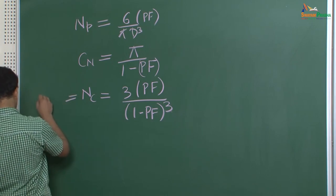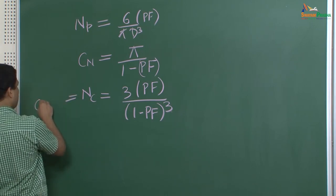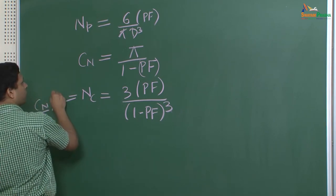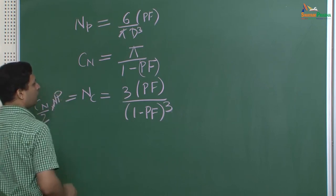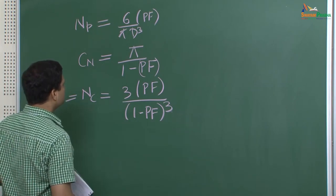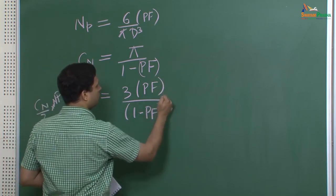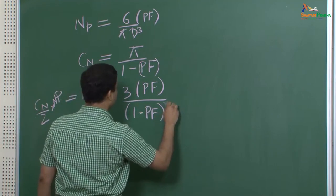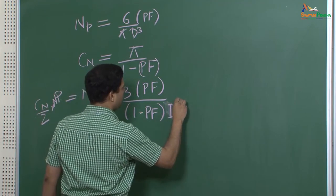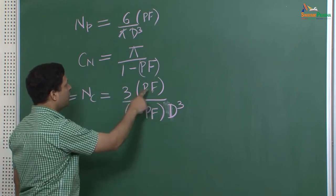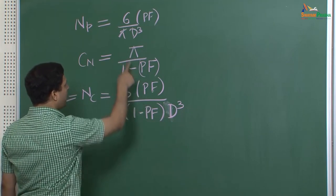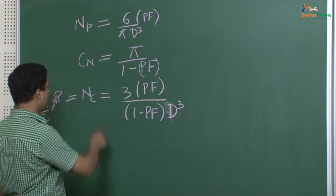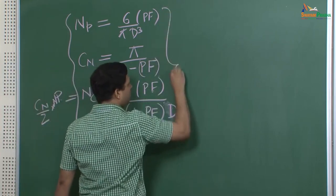The number of contact points per unit volume uses the coordination number divided by 2 times NP, and therefore this comes out to 3 Pf by pi D-cubed times (1 minus Pf). Actually, there is no cube over the (1 minus Pf) factor — this should be 3 Pf divided by pi D-cubed, with pi cancelling, and you also have the (1 minus Pf) factor. So this is the relation valid for non-regular structure.